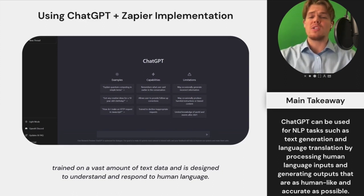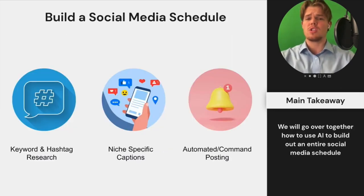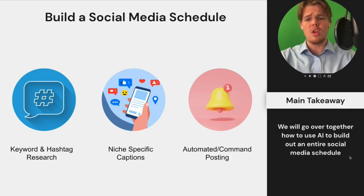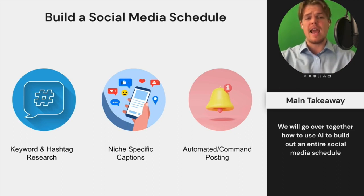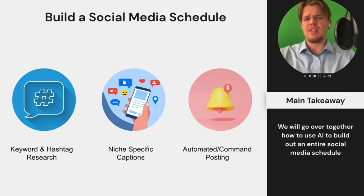This course covers a ton of automations and ChatGPT prompts, and you're going to be better suited to handling your social media management. We'll go through the entire process: building a social media schedule through keyword and hashtag research with ChatGPT, generating niche-specific captions, and building both an automated and a command-based posting schedule. You might wonder why you'd want a command version rather than fully automatic — that comes down to specific use cases.